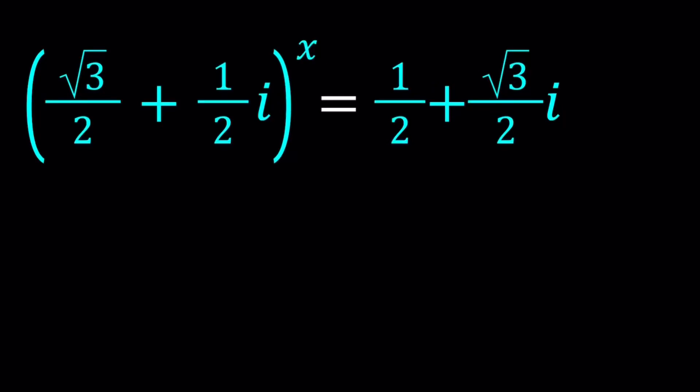Hello everyone. In this video, we're going to be solving an interesting exponential equation with complex numbers. We have (√3/2 + 1/2i)^x = 1/2 + (√3/2)i. So we have a complex number raised to a power x, and it switches the real and imaginary parts. What type of x is able to do that? That's what we're going to explore, and it's going to be pretty interesting. So let's get started.